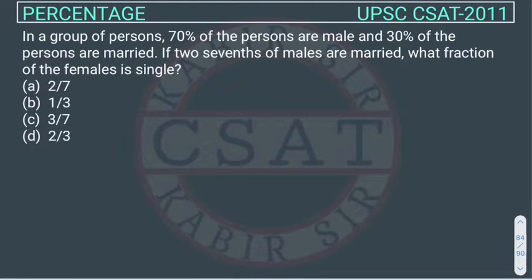This is a percentage question asked in UPSC Civil Services CSAT exam 2011. In a group of persons, 70% of the persons are male, and 30% of the persons are married.